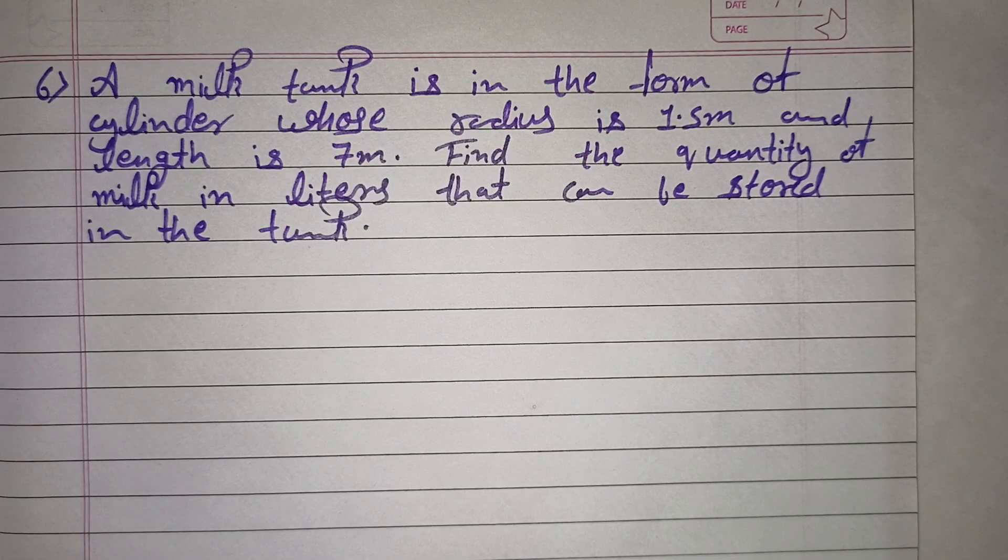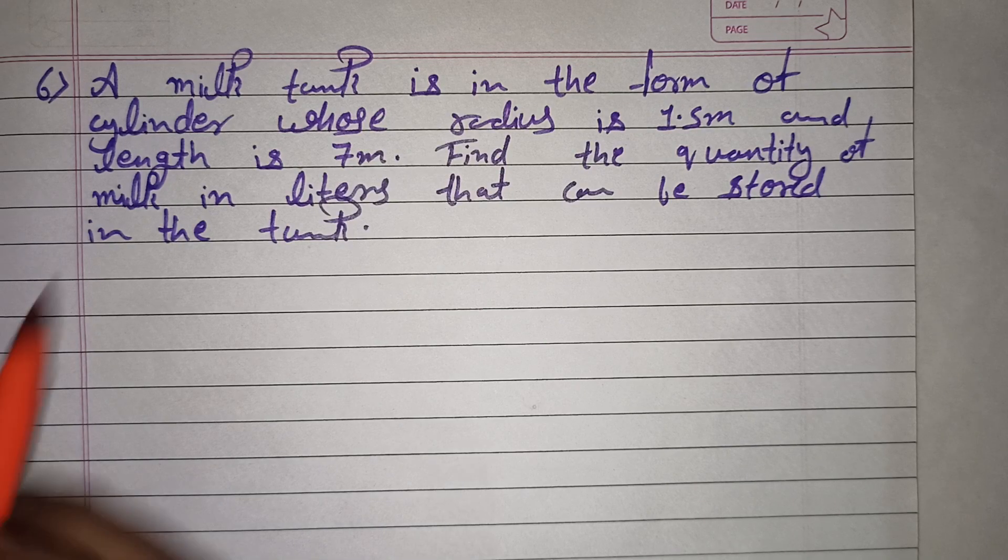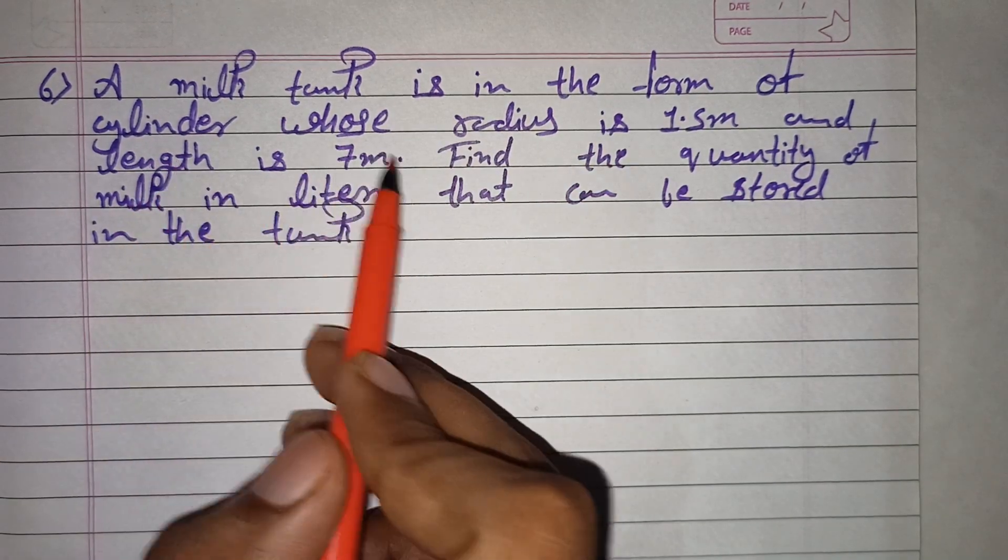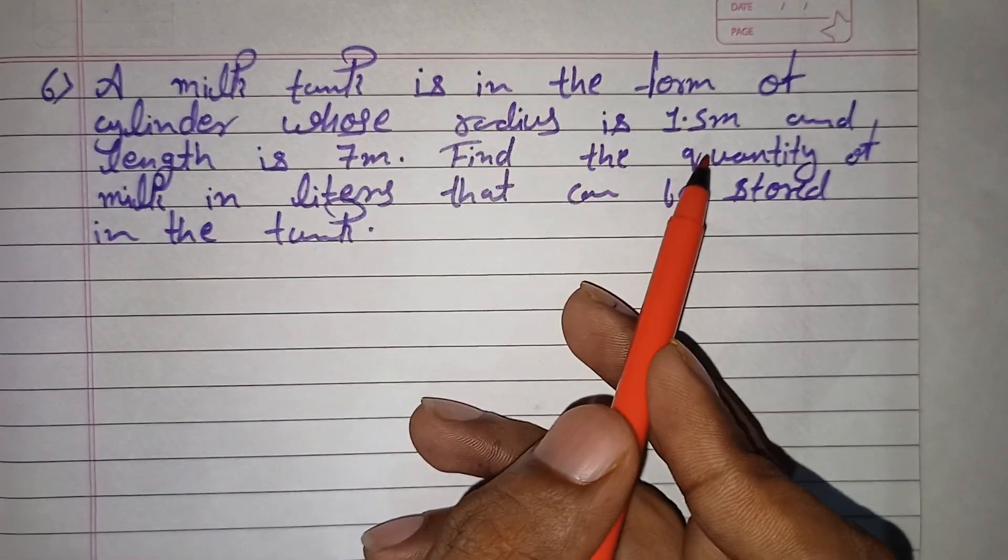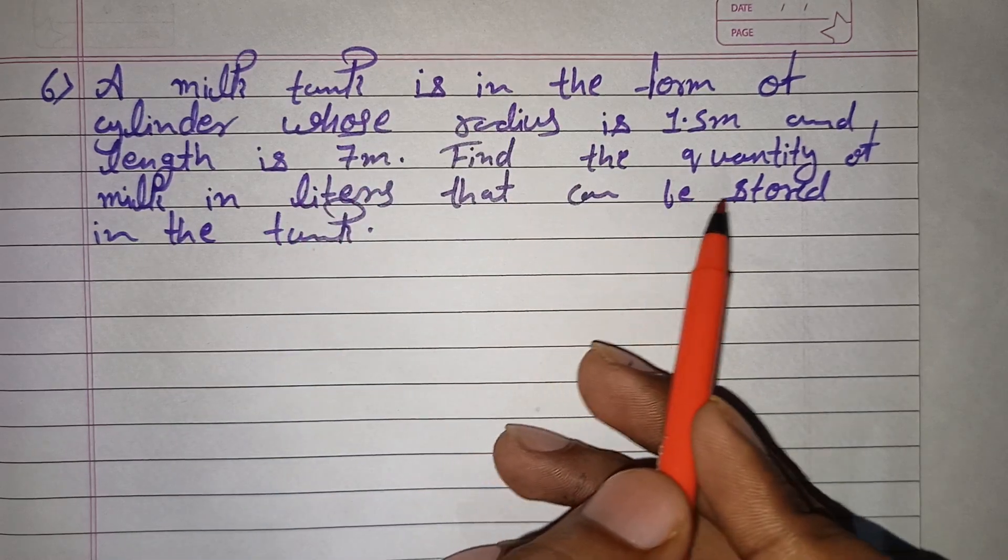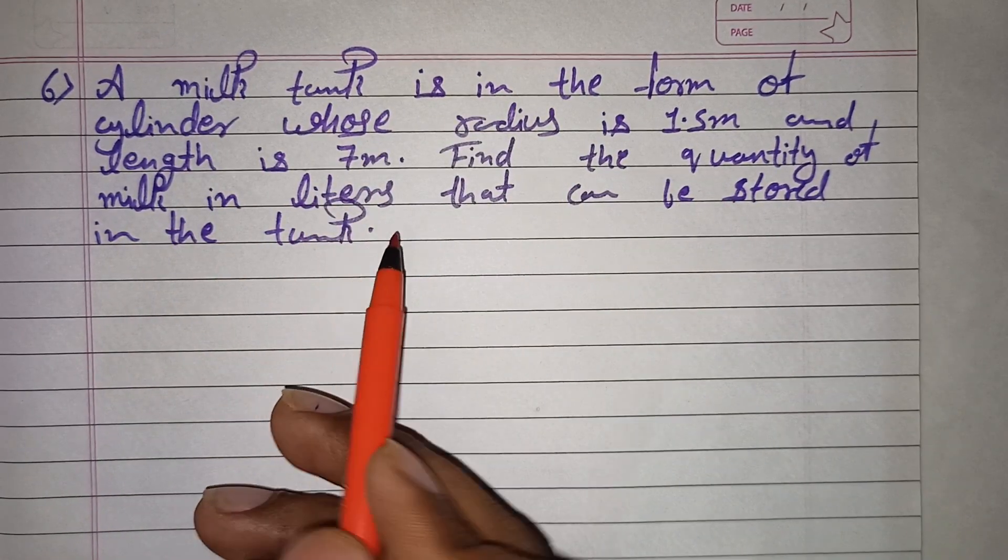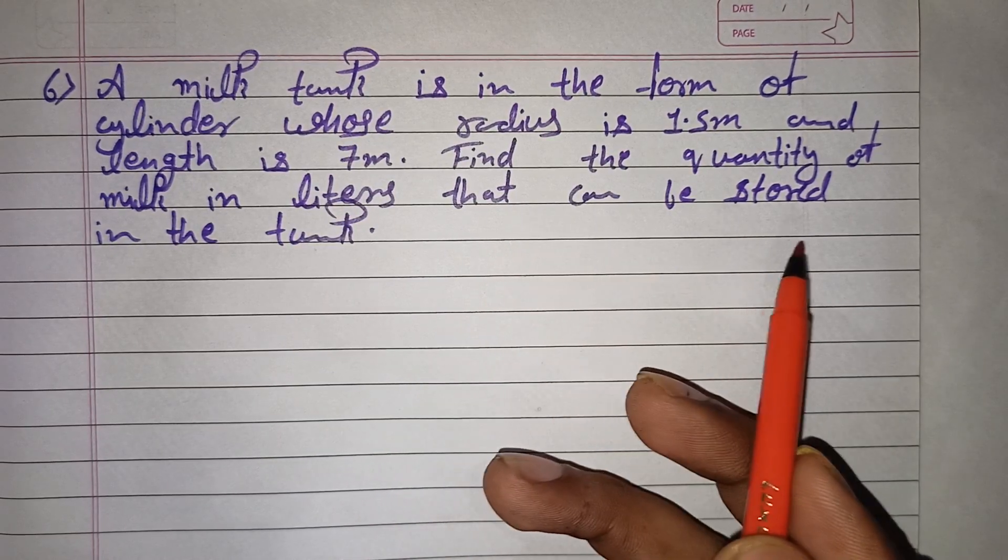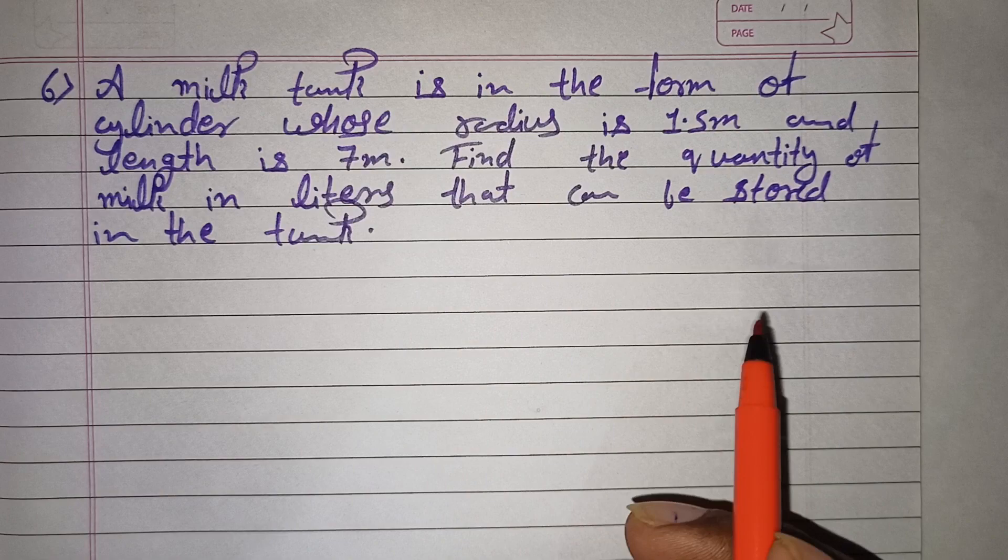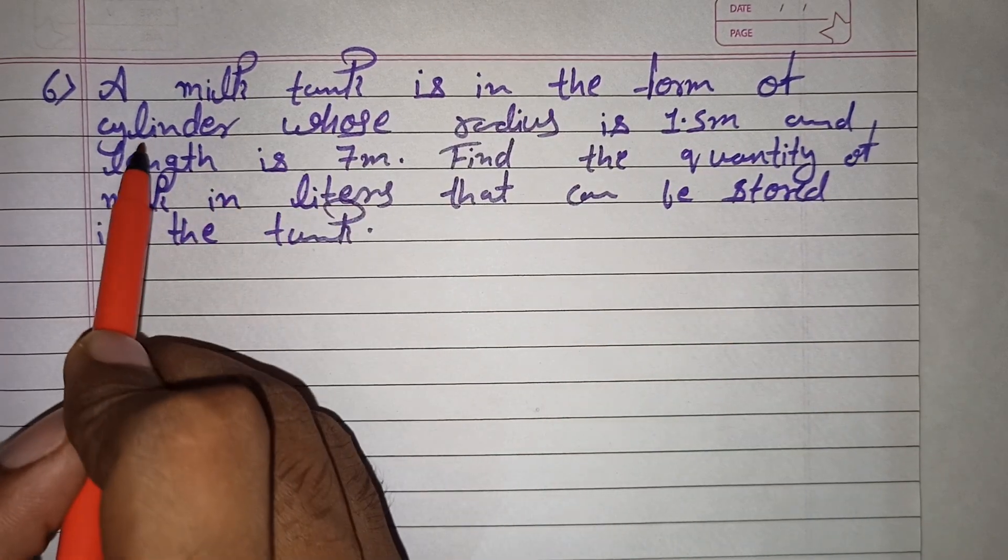Hello students, in today's video we will discuss question number 6 from chapter Mensuration, exercise 11.4. The question is: a milk tank is in the form of a cylinder whose radius is 1.5 meters and length is 7 meters. Find the quantity of milk in liters that can be stored in the tank. Here a milk tank is a cylindrical shape.